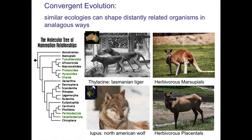I want to introduce the concept of convergent evolution. We talked about the ecological approach to cognition, and this is really one of the most important implications of that approach — that similar ecologies can shape distant or distantly related organisms in analogous ways.